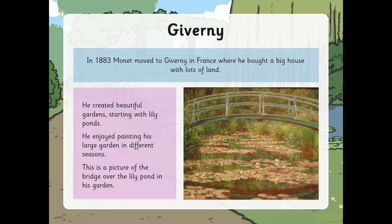Because remember, Monet liked to paint the same thing many times to show how the light changed at different times of day, and he did this using different painting techniques and different colours. This is a picture of the bridge over the lily pond in his garden. Monet painted many pictures of this bridge.